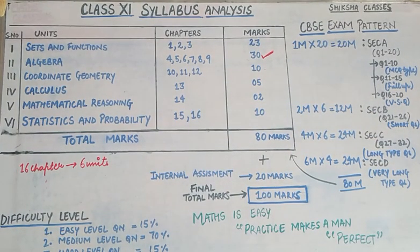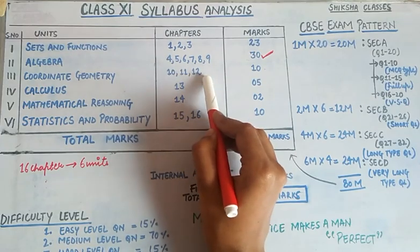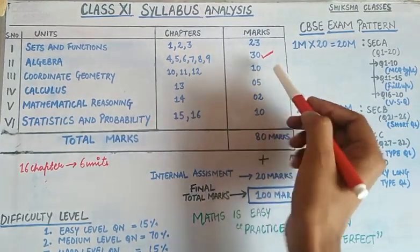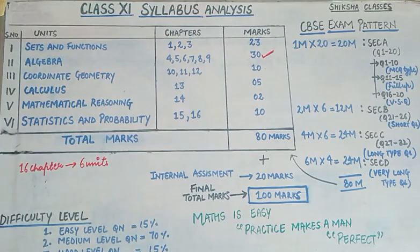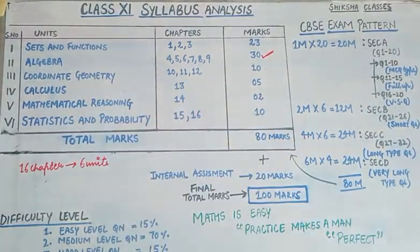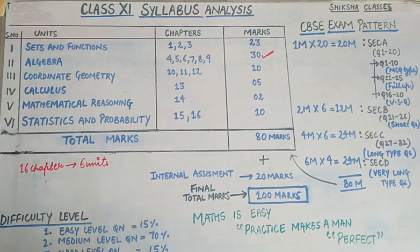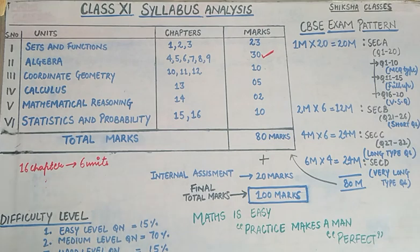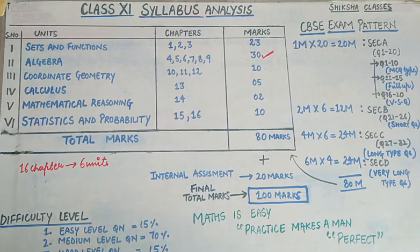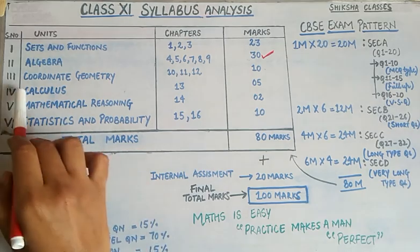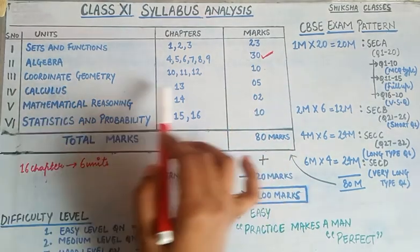Next is Coordinate Geometry — chapters 10, 11, and 12 — carrying a total of 10 marks. Next is Calculus: in 11th, calculus is chapter 13, which is fundamental and basic. When you go to 12th, you will get 5 chapters of calculus, which will be very vast and very interesting. So the 11th calculus builds your base.